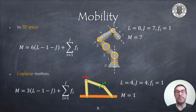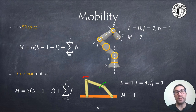On the other hand, in the four-bar mechanism below, the number of links is 4, as well as the number of joints, and each of them has only one degree of freedom. So, the mobility for this articulated system is 1.